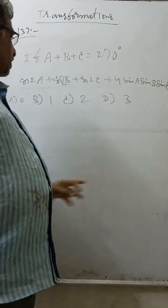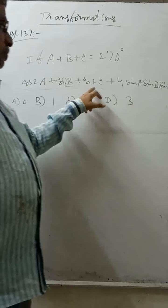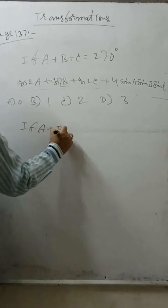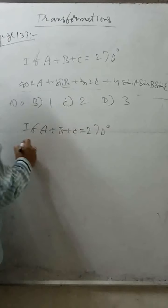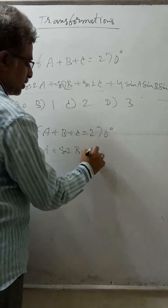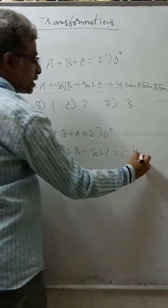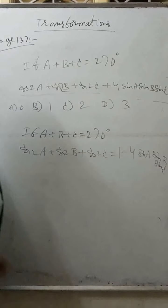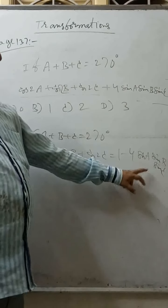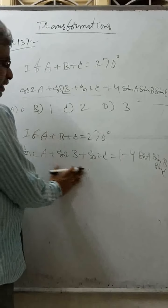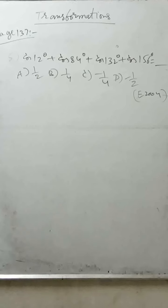Problem: if A+B+C = 270°, find cos 2A plus cos 2B plus cos 2C plus 4 sin A sin B sin C. We just proved that when A+B+C = 270°, cos 2A+cos 2B+cos 2C = 1 minus 4 sin A sin B sin C. So adding 4 sin A sin B sin C: 1 minus 4 sin A sin B sin C plus 4 sin A sin B sin C = 1. Answer: option B, 1.